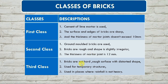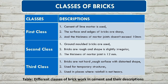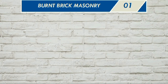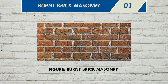In third class bricks, the brick is hard and rough, and can be used in areas where there is heavy rainfall. This is the brick, cement, and mortar guide. As you can see in the figure, this is how bricks appear on the wall with mortar.